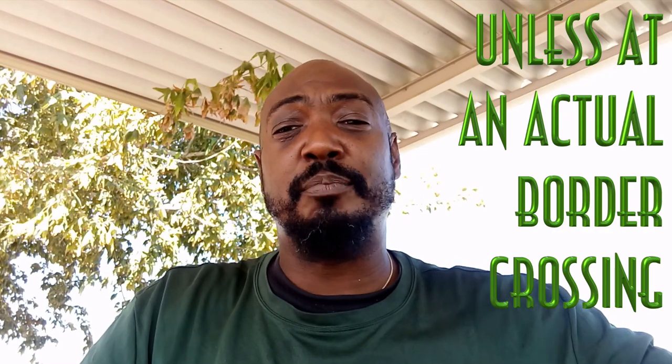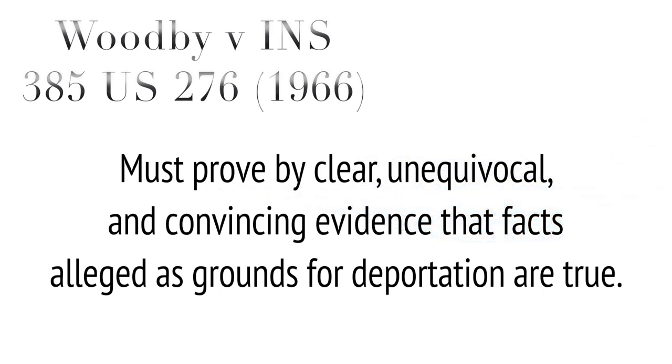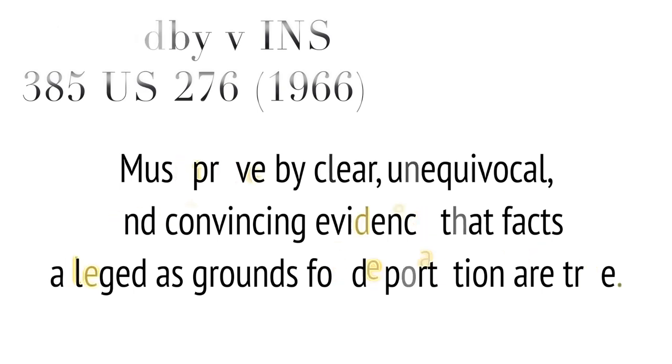Unless you are actually beside the border crossing between countries, that's when you have to articulate or show proof. Outside of that region, allowances are more restricted. They have to have a reason they can articulate for you to prove your citizenship status. Under VINS, 385 US 276 (1966), those bringing charges must prove by clear, unequivocal, and convincing evidence that the facts alleged as grounds for deportation are true — basically the old adage of innocent until proven guilty.